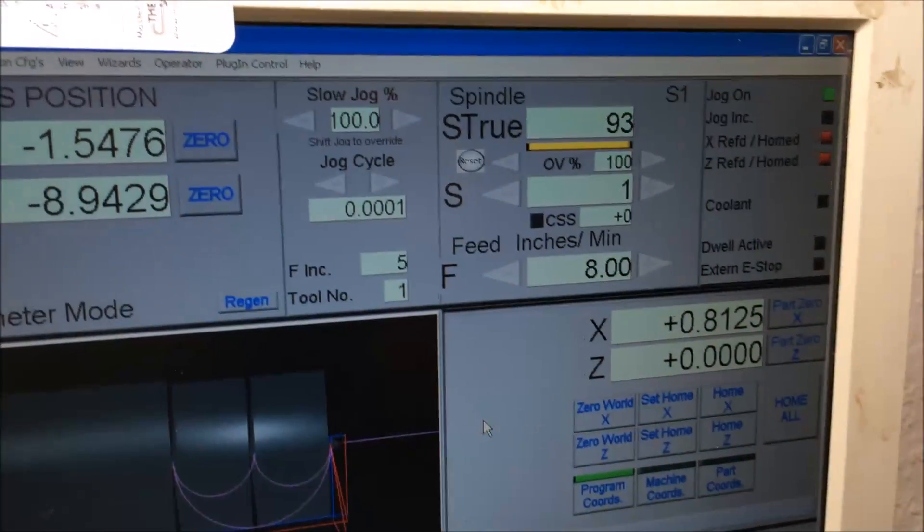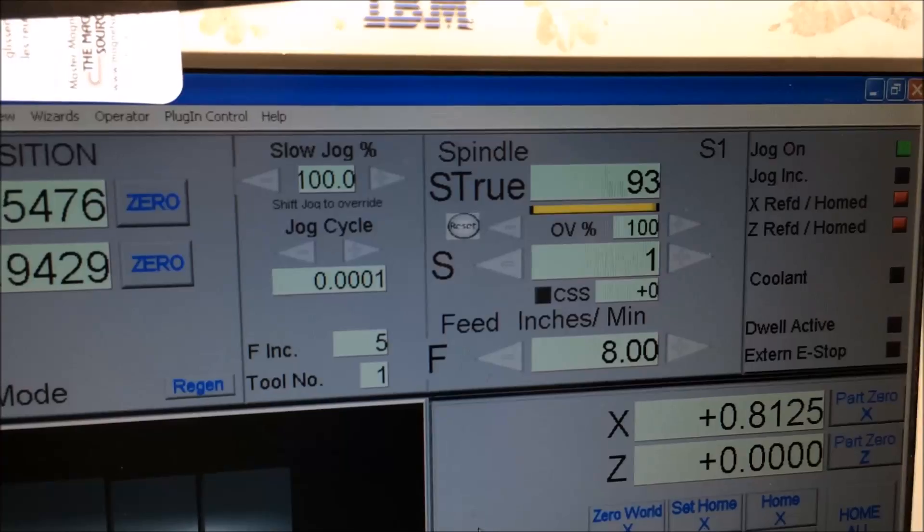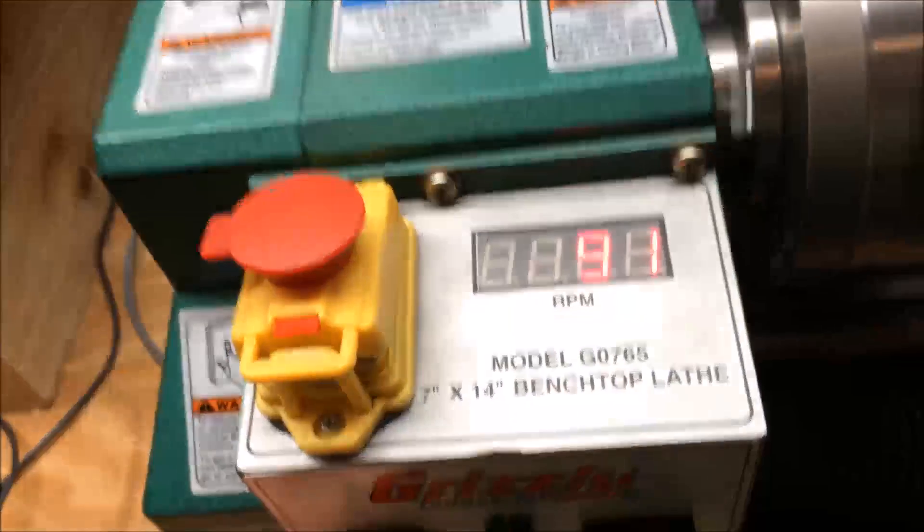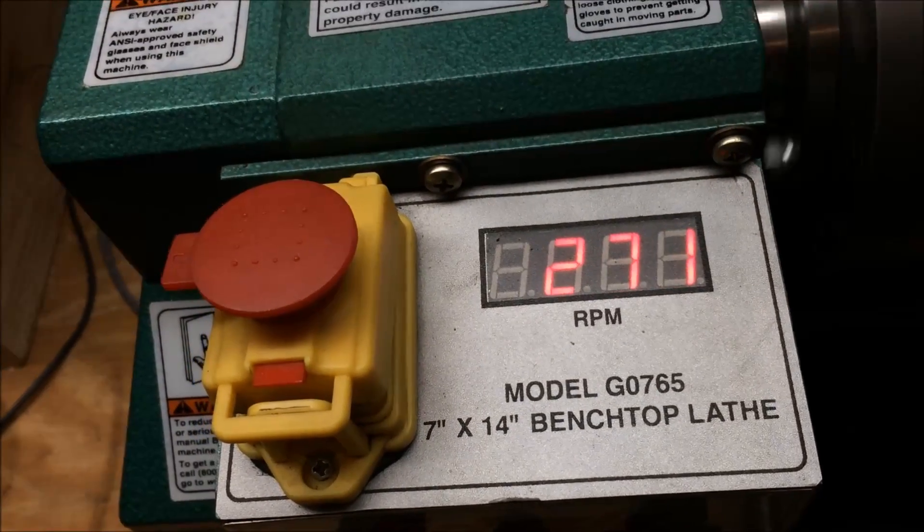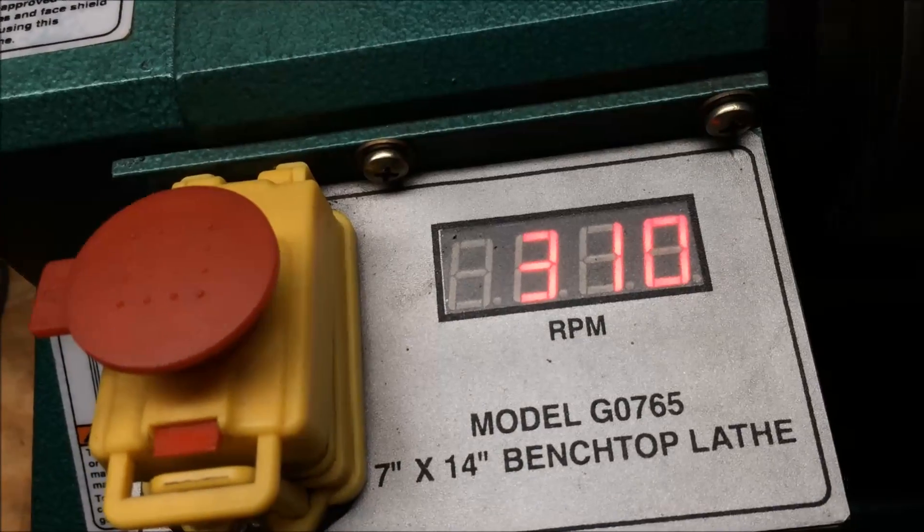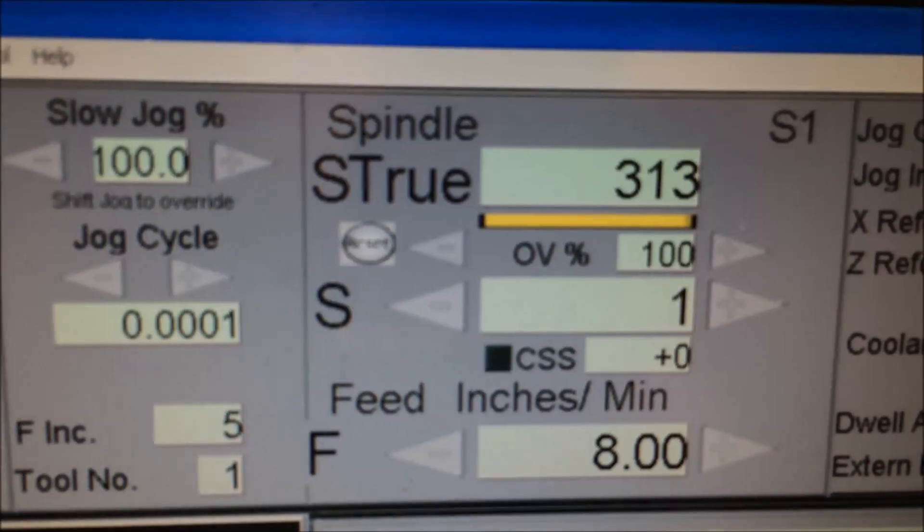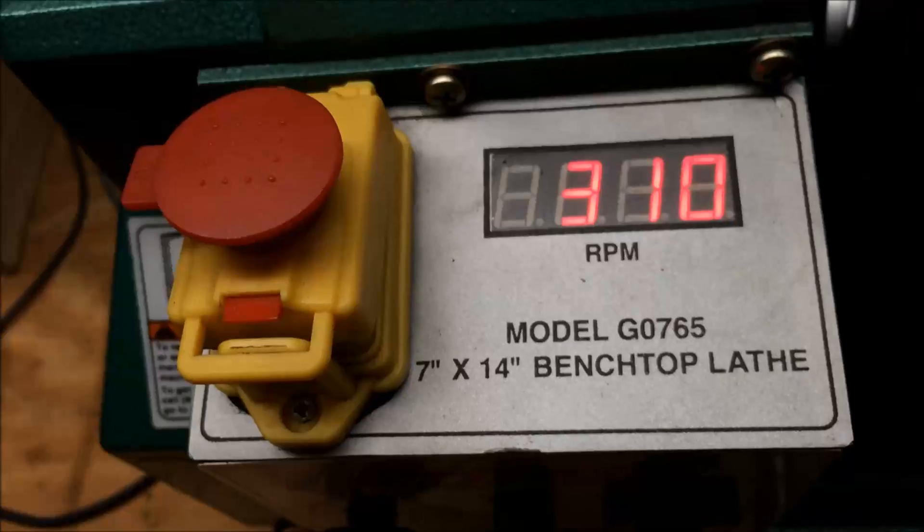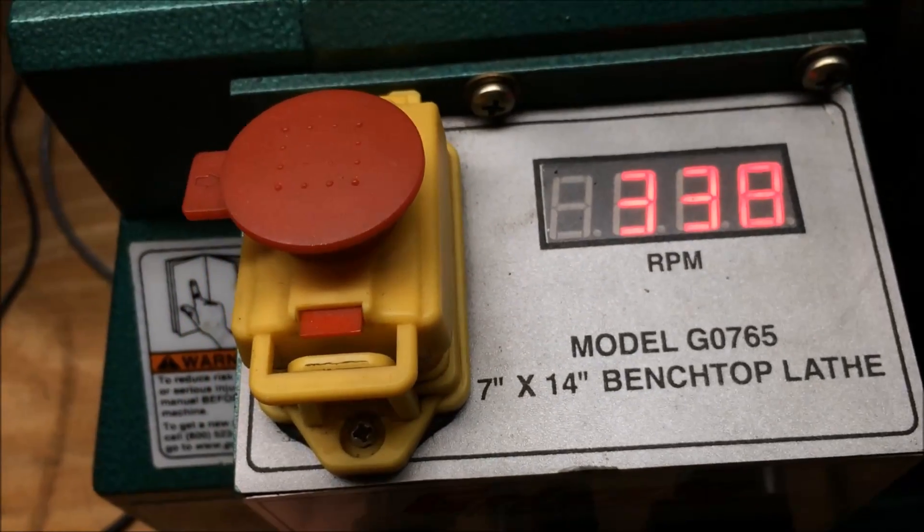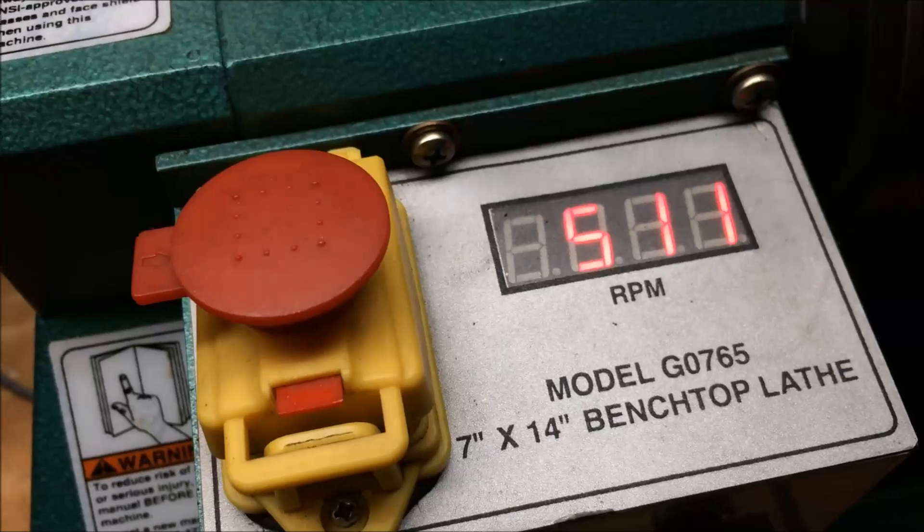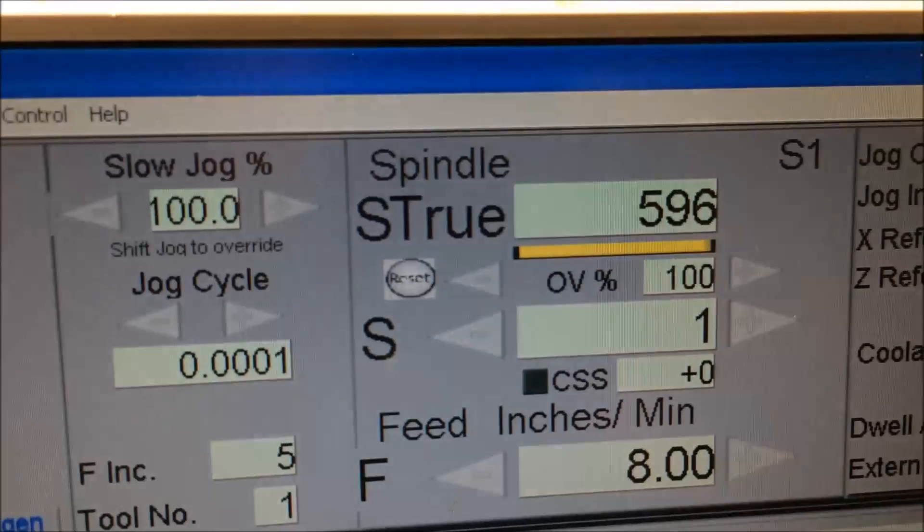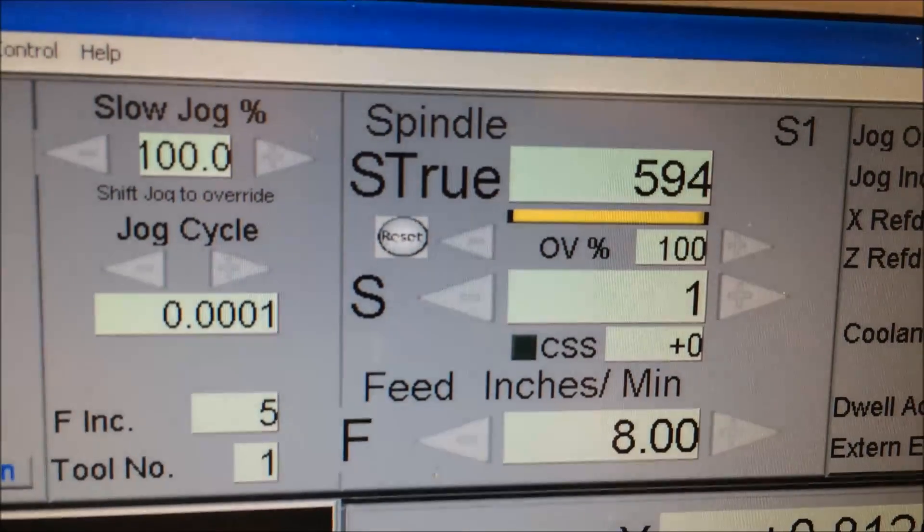Right now, Mach 3 says I'm going about 93 RPM. The Grizzly tach says 91, so that's pretty good. Turn it up a little bit. The Grizzly tach is settling in at 310, Mach 3 thinks it's at 313, 314, not too bad. Turn it up a little bit more. 593, 596. So, that's pretty good.